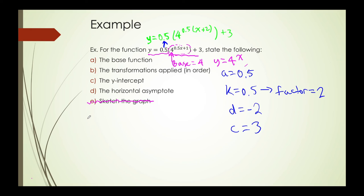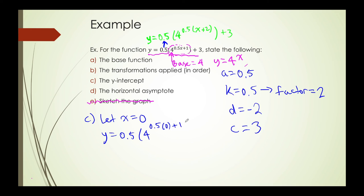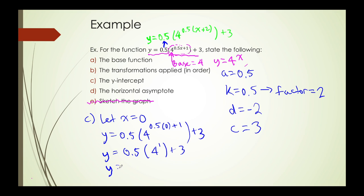What about the y-intercept? To find it, all we need to do is let x equal 0 and then solve for y. So when we let x equal 0, we get y is equal to 0.5 multiplied by 4 to the power of 0.5 times 0 plus 1, and then we add 3. Going step by step: 0.5 times 0 gives 0, plus 1 gives us 4 to the power of 1, which is 4. Half of 4 is 2, and 2 plus 3 gives a total of 5. So my y-intercept is 5.